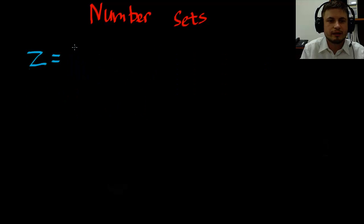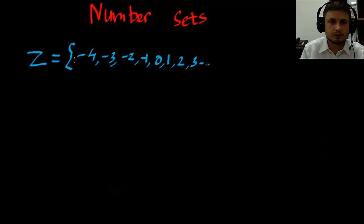And the next number set is called Z or zed as we say in Canada. And this would be integers. And essentially it's everything that we had in natural numbers but this time with negatives as well. So everything from let's just say minus 4, minus 3, minus 2, minus 1, 0, 1, 2, 3 and so on. And this is also to infinity. So essentially it's all of the whole numbers but including the negative numbers.